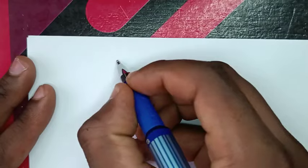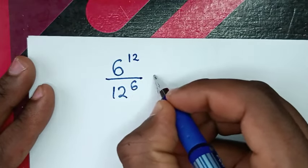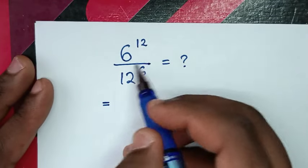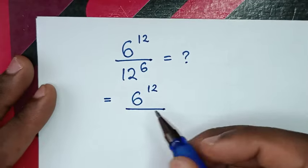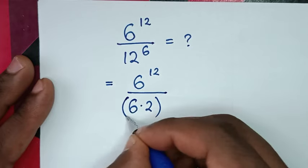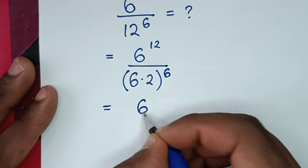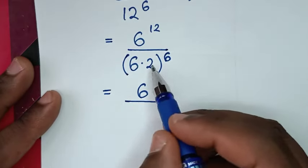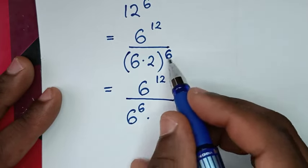Now let us solve using another method. From our problem, 6 power of 12 over 12 power of 6, we keep the numerator as 6 power of 12. In the denominator, 12 is the same as 6 times 2, so 12 power of 6 becomes (6 times 2) to the power of 6, which equals 6 power of 6 times 2 power of 6.